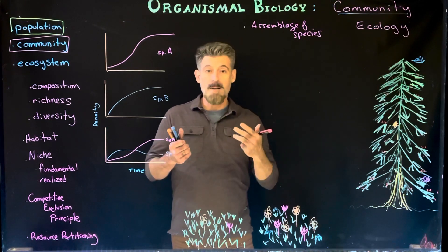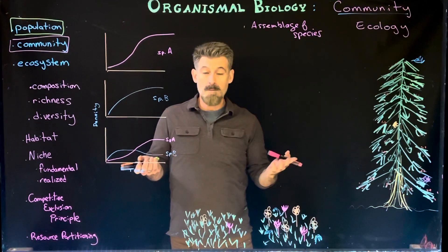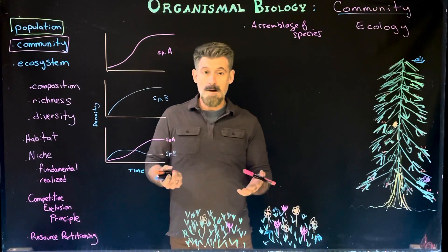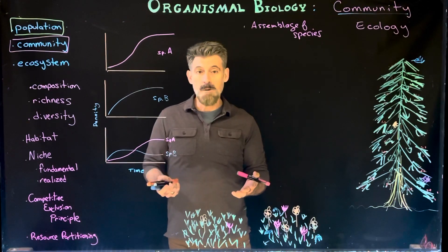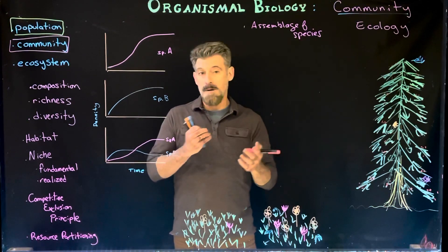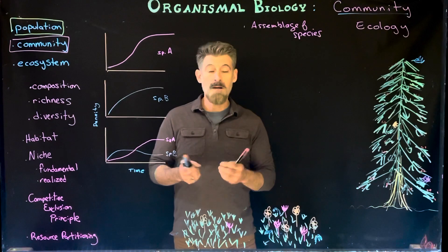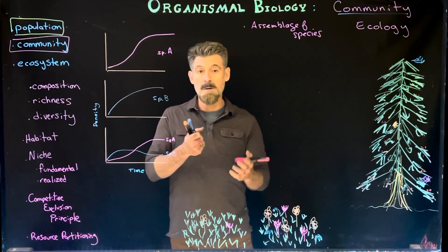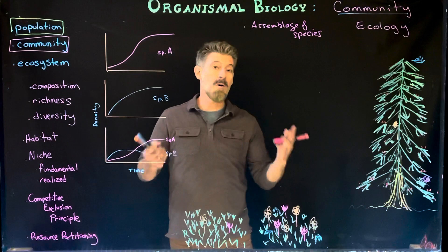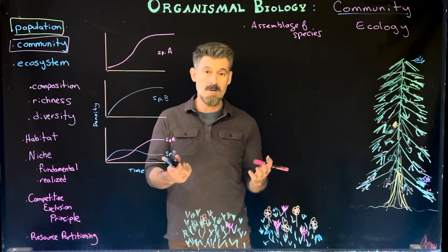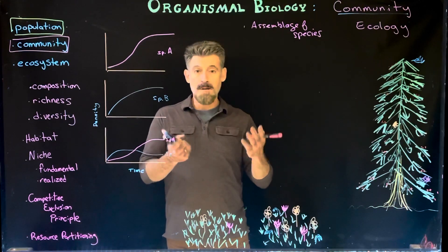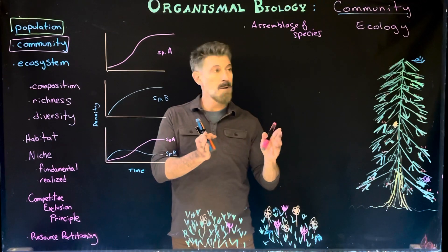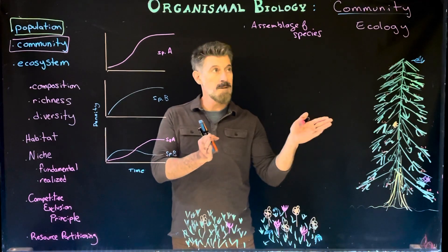Sometimes species don't interact with each other — they just happen to live in the same area. Sometimes they're directly competing, sometimes one is a predator and one is prey, and sometimes they complement one another. There are all sorts of relationships within a community.